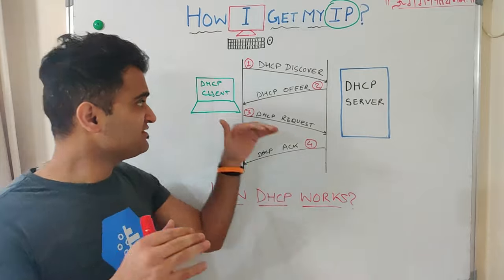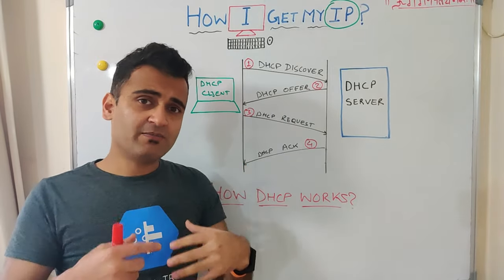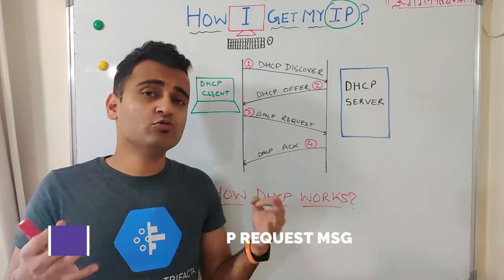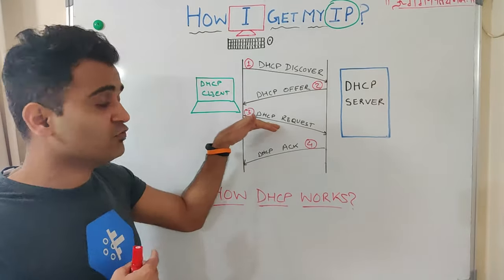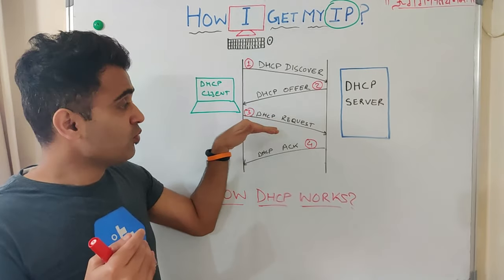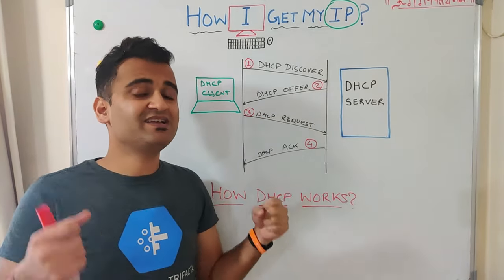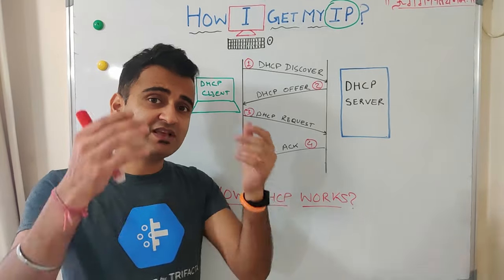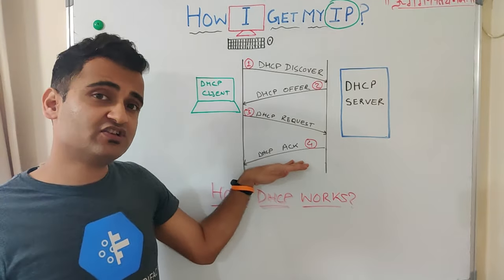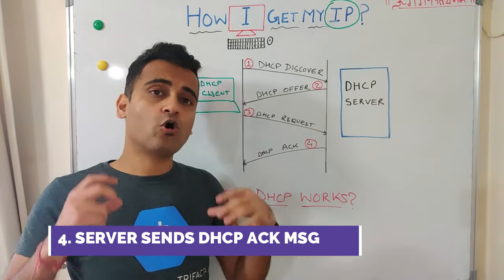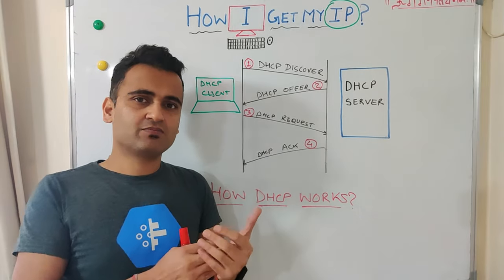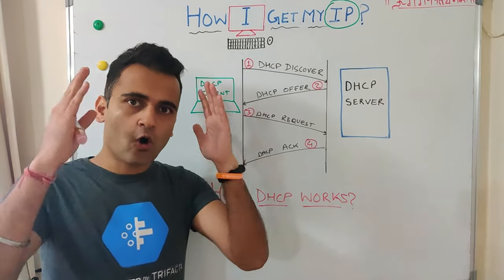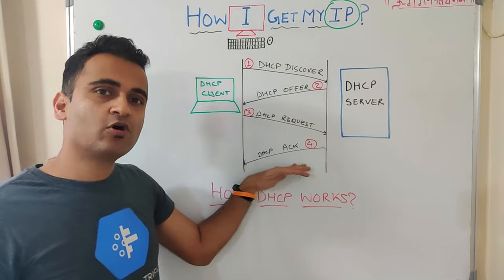In step three, the DHCP client evaluates the offered IP address and sends a DHCP Request back, saying: 'Yes, it looks fine — please book this IP address for me.' Once the DHCP Request reaches the DHCP server, the server knows the client is comfortable with the offer. In step four, the DHCP server sends a DHCP Acknowledgement, which includes all the data related to that IP address — the subnet mask, gateway address, and all other network details.